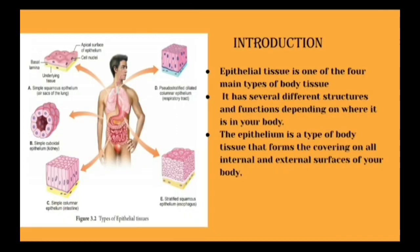Epithelium tissue is one of the four main types of body tissue. The four main types are epithelium, connective tissue, muscular tissue, and nervous tissue. In this video we'll be studying about the epithelium tissue specifically.